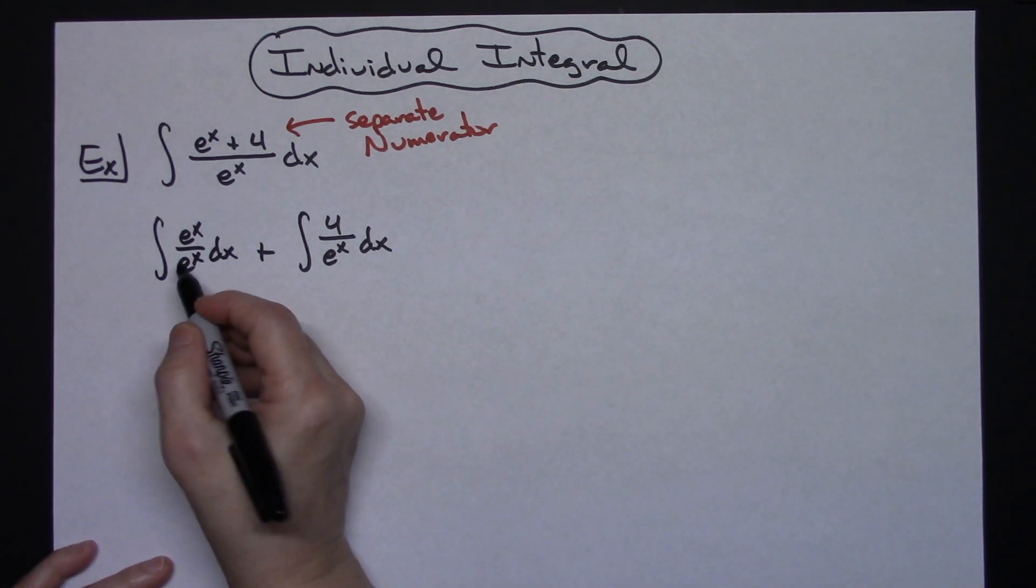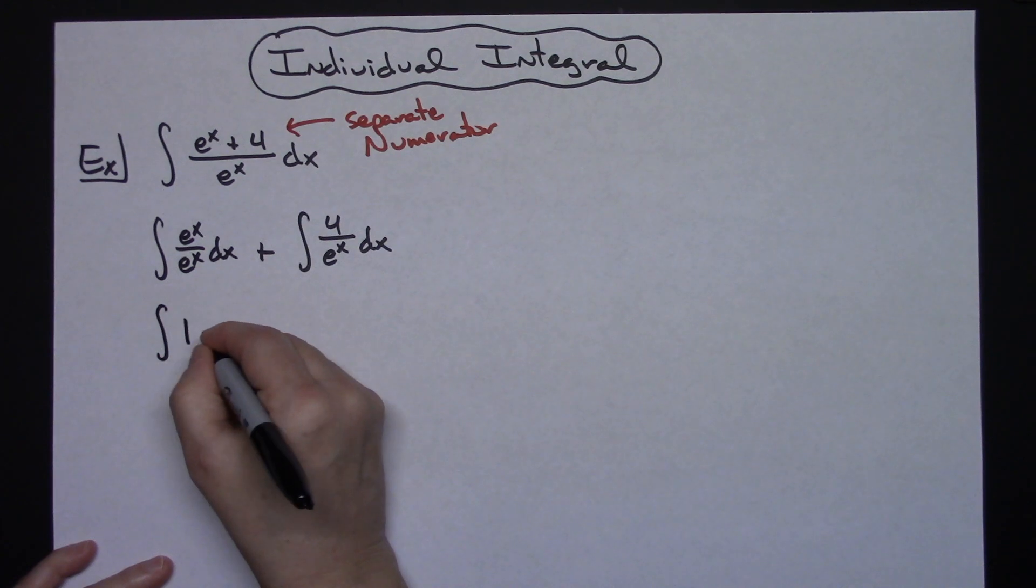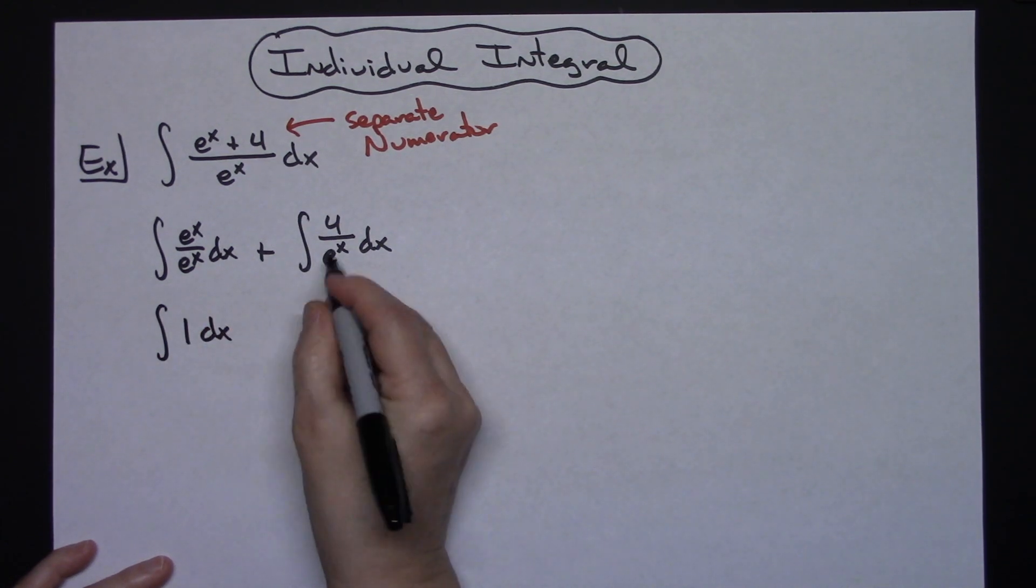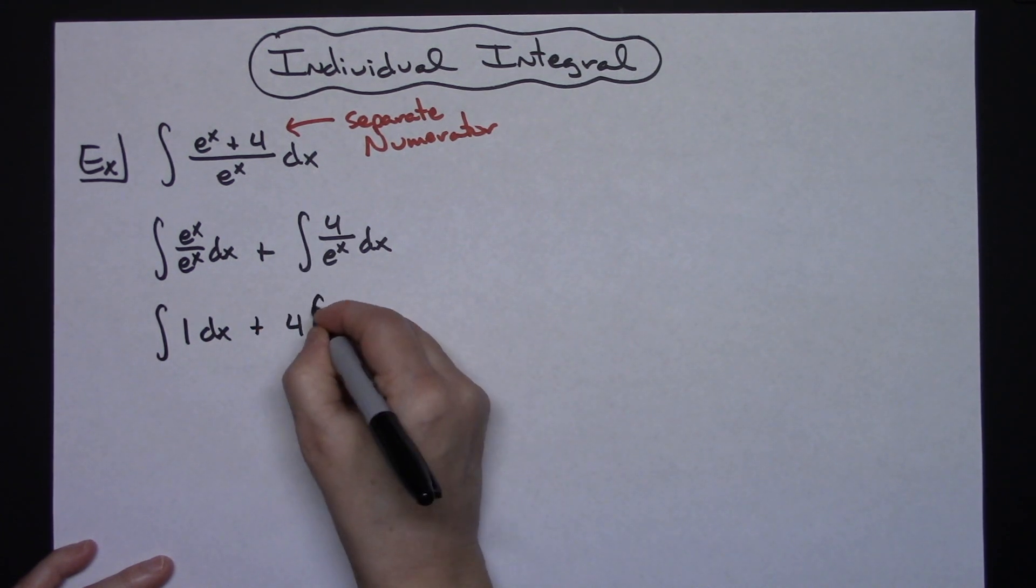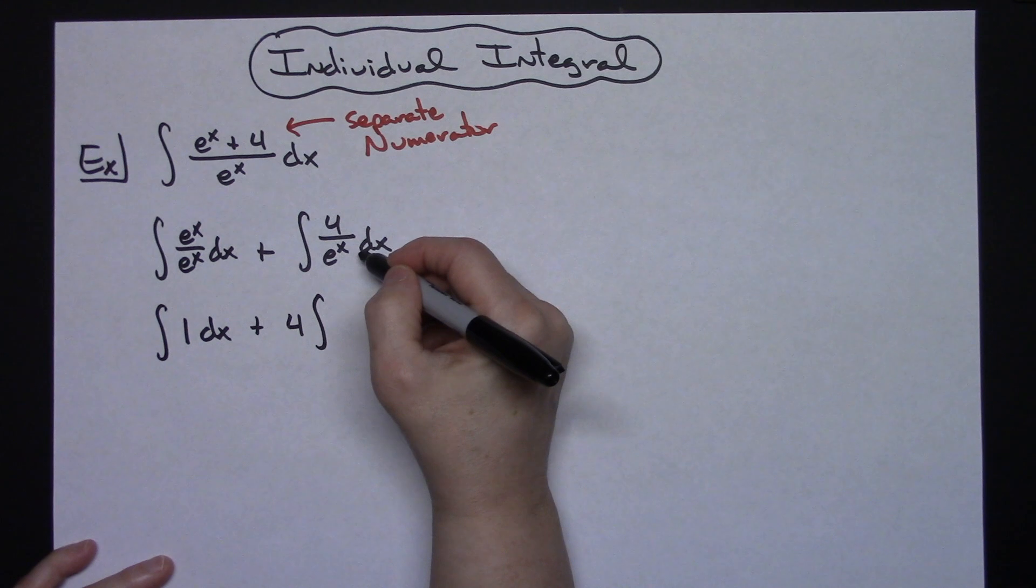E to the x over e to the x is 1, so really I've got the integral of 1 dx right here. On this one I'm going to go ahead and pull that 4 out in front. And then that would be a 1 over e to the x.